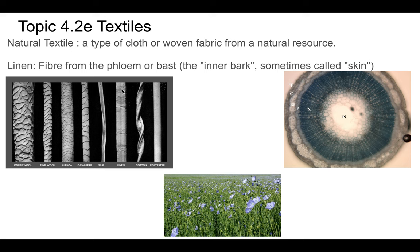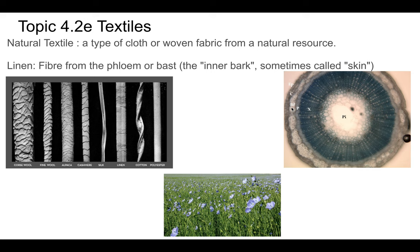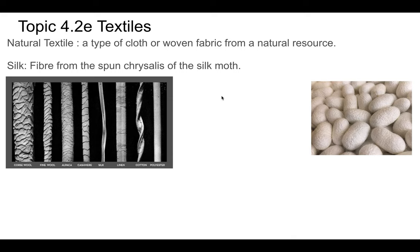Linen comes from the flax plant, which is a green stocky plant. What you're doing is extracting the phloem or bast — the inner part of the bark, the layer marked BF in the diagram. You're extracting those fibers from the phloem of the plant.